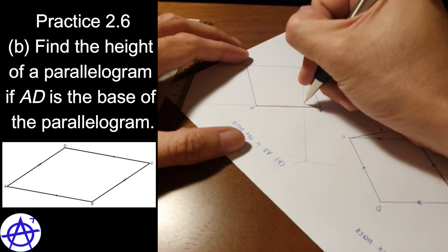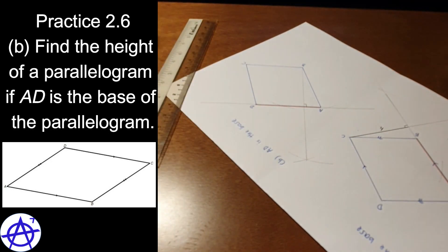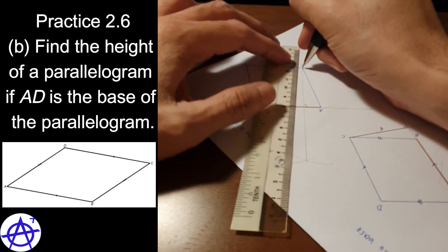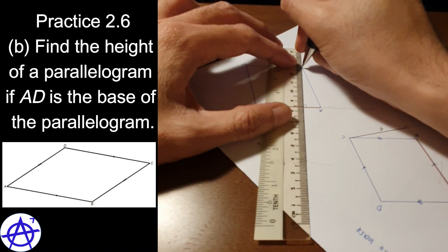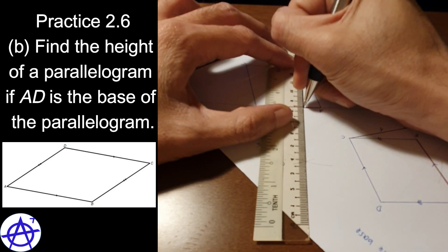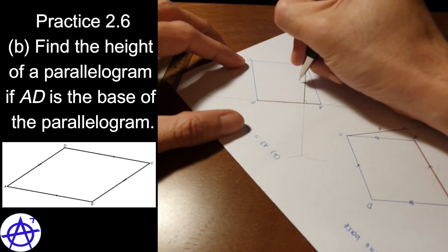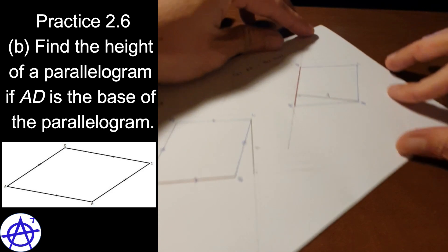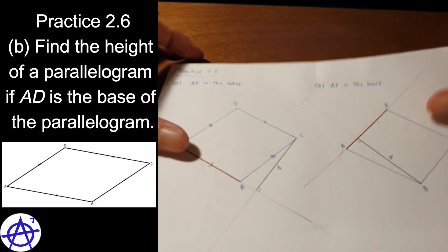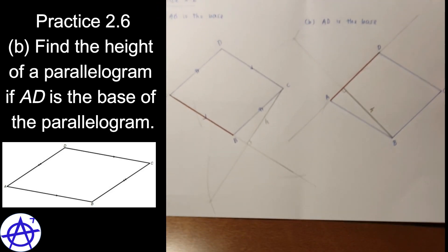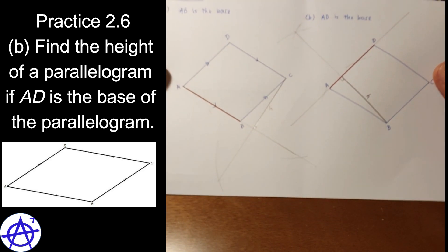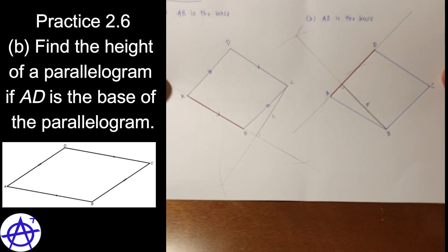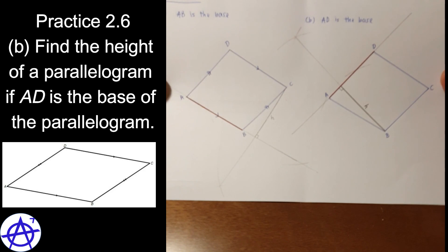So I know that this line is perpendicular to the line AD. And where is the height of this parallelogram, if AD is the base? So this will be the height. So this is how we find the height of a parallelogram when we know one of the sides is a base.